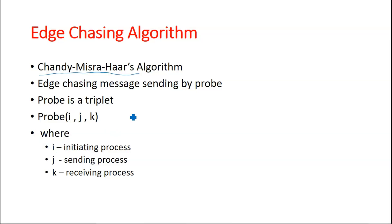Here in edge chasing there is a special data structure called probe involved which is a triplet. The probe is a triplet that takes the form probe of i comma j comma k.